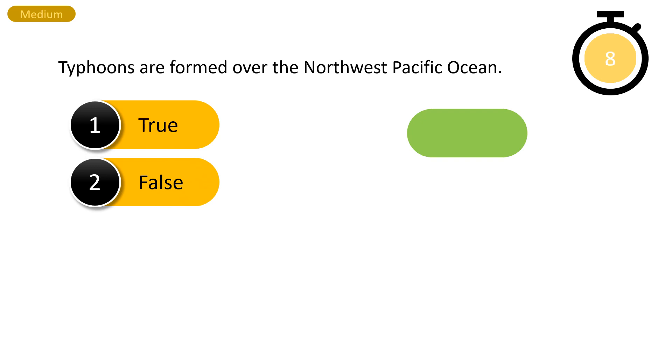The first question of the medium round is: typhoons are formed over the Northwest Pacific Ocean. Your options are true or false. The time starts now. And the right answer is true.